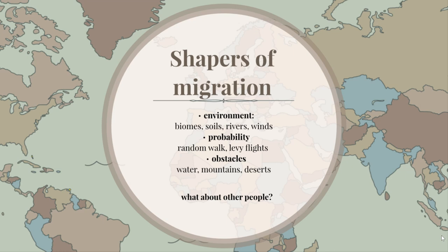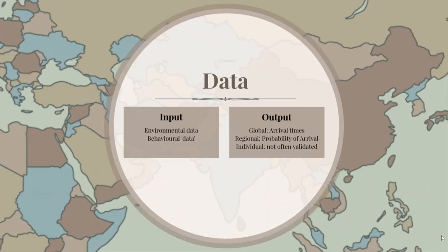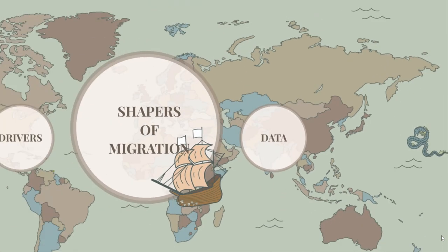On data: we usually bring in input data which is environmental data and behavioral data — such as reproductive patterns — and the output is usually arrival times at different locations, or probability of arrival. For example: by what time would you reach a given region, or can you even reach Easter Island if you follow the currents? There are also many individual outputs that are not validated — you come up with an abstract understanding of the process without having output data to compare against.